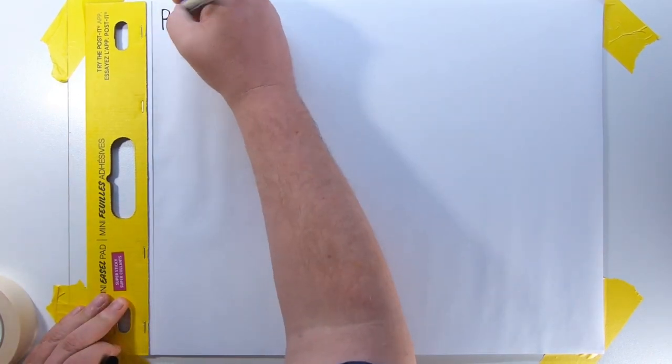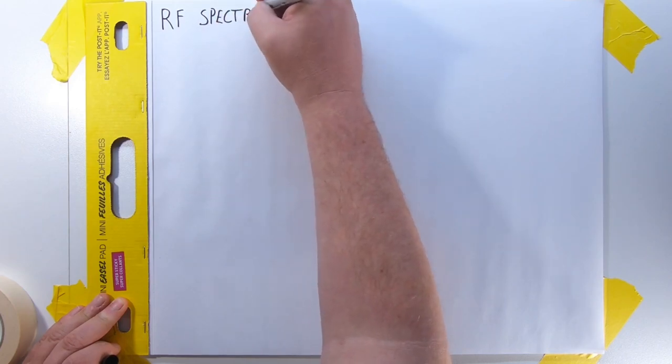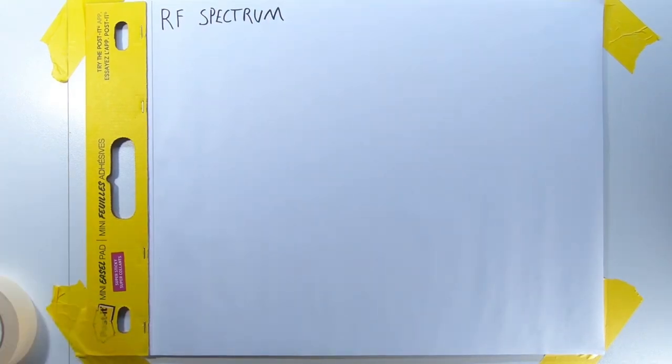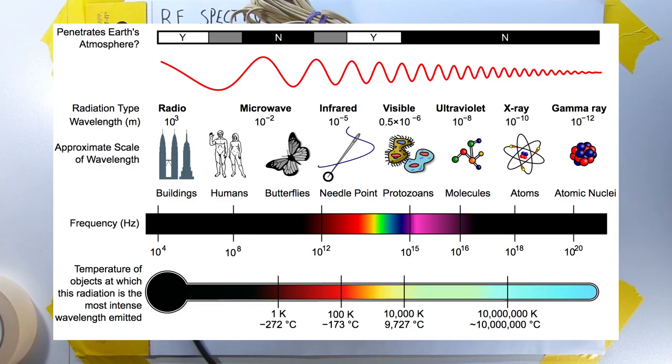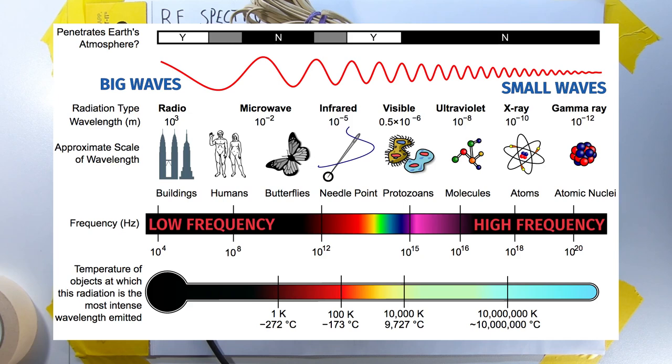Now that we know what waves are, it's time to talk about the RF spectrum. But before I do that, I got to call in some help. Okay, so here's the electromagnetic spectrum, or at least a graph of it. Again, it's important to notice that as the wavelength gets shorter, the frequency gets larger.